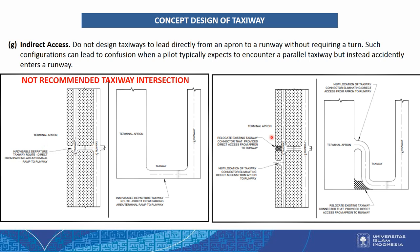If the direct access already exists — the taxiway is already constructed — we can use alternatives: relocate the existing taxiway connector that provides direct access from apron to runway, or build a new taxiway connector eliminating direct access from apron to runway.